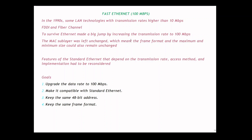To achieve 100 Mbps speed, the MAC layer was left unchanged, meaning the frame format was the same and the maximum and minimum size of the frame remains the same. The goals of Fast Ethernet are to upgrade the data rate to 100 Mbps, make it compatible with standard Ethernet, and keep the same 48-bit address and frame format.